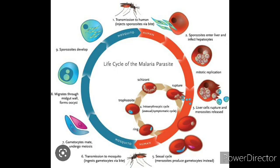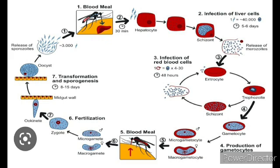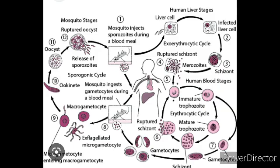Gametogony is described in two phases: first is gametocytogenesis, which occurs in the bloodstream of the vertebrate host, and the second is gametogenesis, which takes place in the gut of the mosquito. The third stage is sporogony — the formation of spores — also an asexual reproduction which occurs on the outer wall of the midgut. These are things we already covered in the previous video.